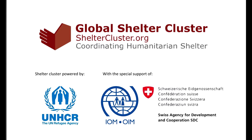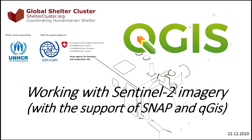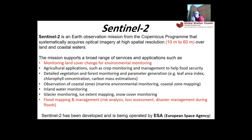Good afternoon everyone. We are going to discuss how to work with Sentinel imagery with the support of SNAP and QGIS. First, a few words about Sentinel: it is a bundle of satellites from the European Space Agency, and the aim of this mission is to support a broad range of services like monitoring of land cover, agriculture, vegetation, forest development, water observation, coastal zones, and glacier monitoring, but also fire extent and especially flood mapping and management.